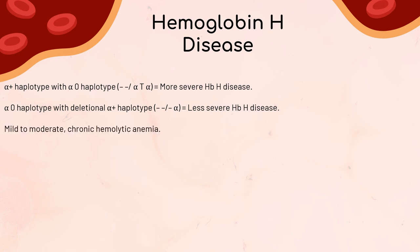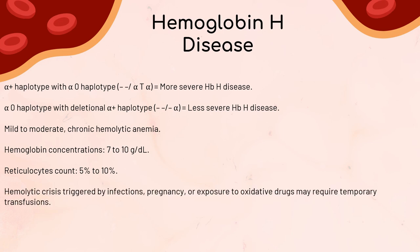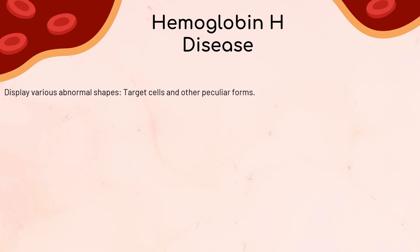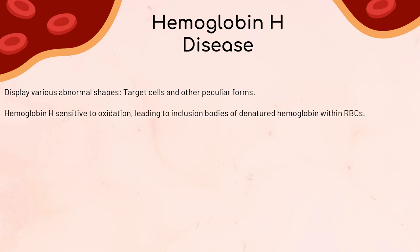Patients with hemoglobin H disease experience mild to moderate chronic hemolytic anemia, with hemoglobin concentrations averaging 7 to 10 g/dL and reticulocyte count of 5% to 10%. Factors like infections, pregnancy, or exposure to oxidative drugs may trigger a hemolytic crisis, requiring temporary transfusions. The red blood cells appear microcytic and hypochromic and display various abnormal shapes, including target cells. Hemoglobin H is sensitive to oxidation, leading to the gradual formation of inclusion bodies of denatured hemoglobin within circulating RBCs, affecting their shape, elasticity, and lifespan.